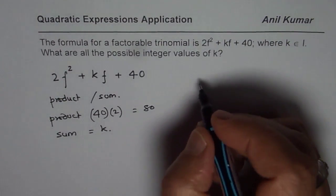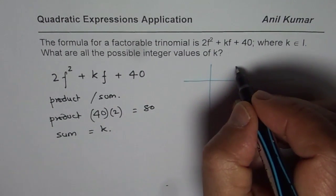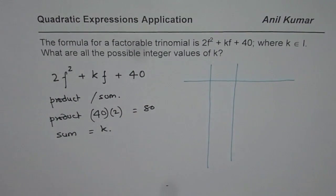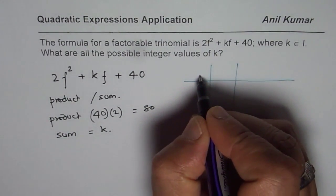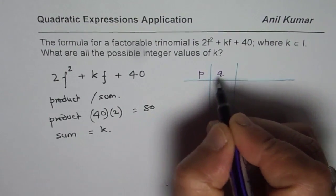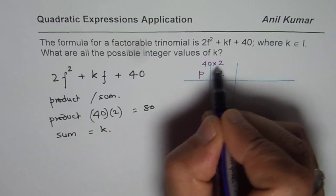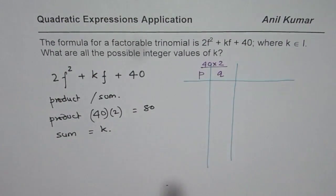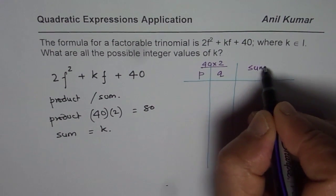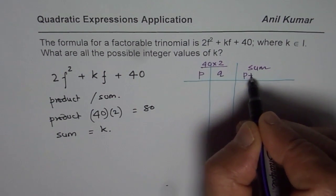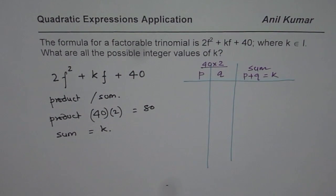That is the whole idea — we will look for two numbers p and q whose product is 40 × 2, that is 80. And then we can write their sum, where p + q should equal k. So these are all the combinations we need to find.